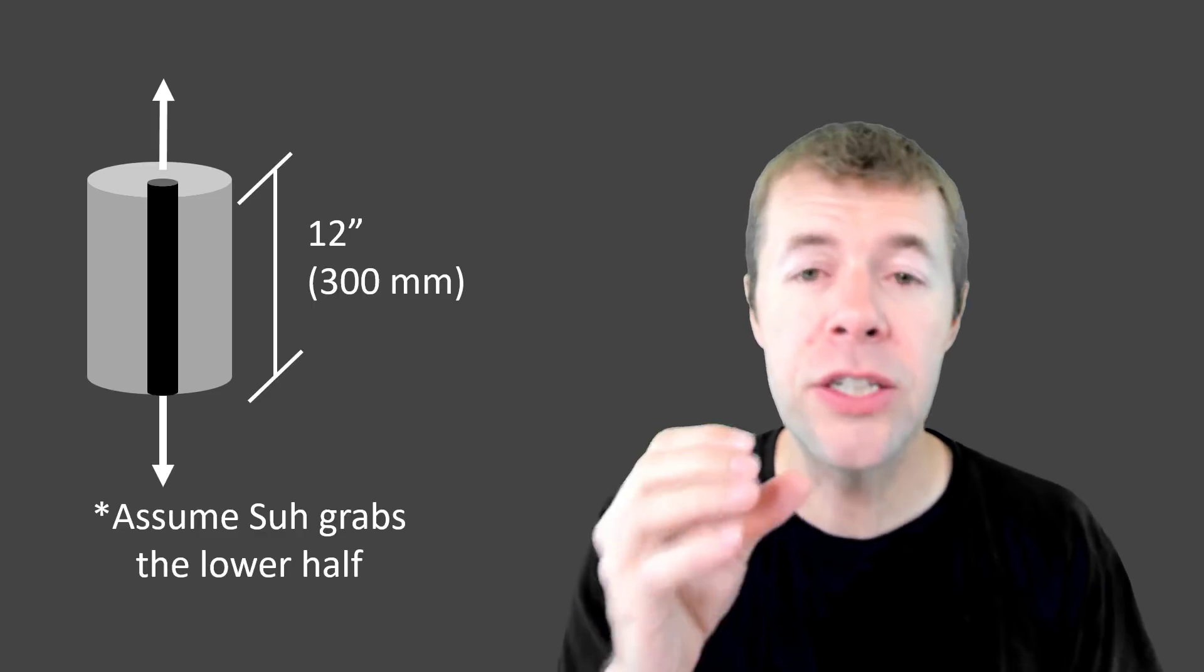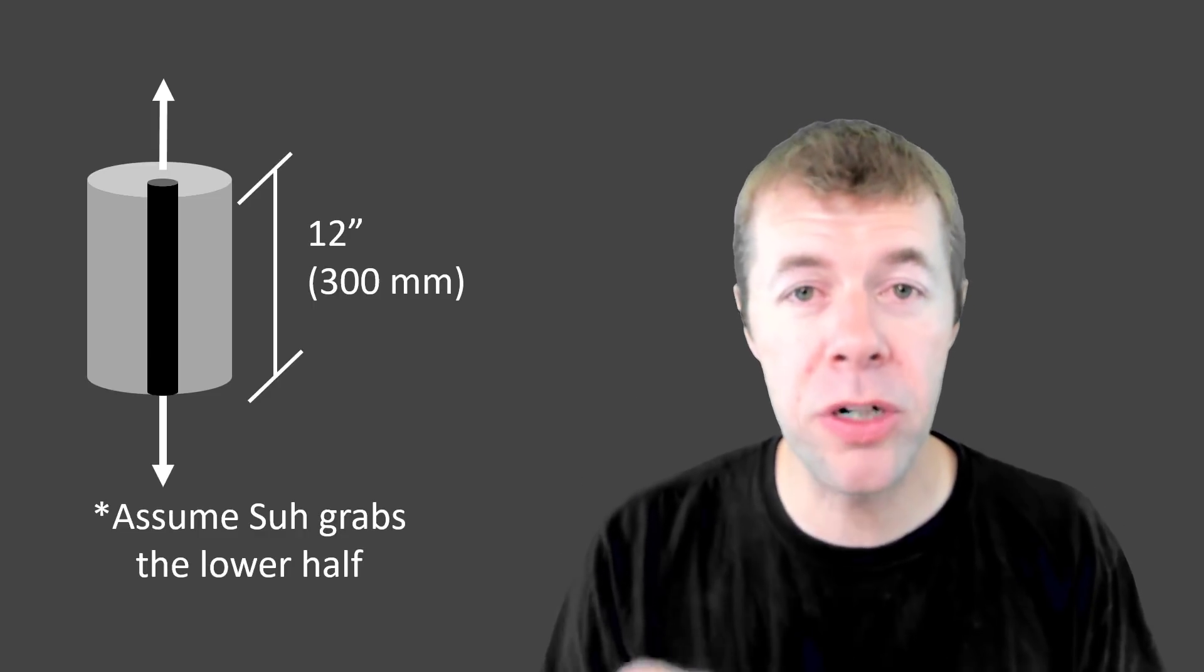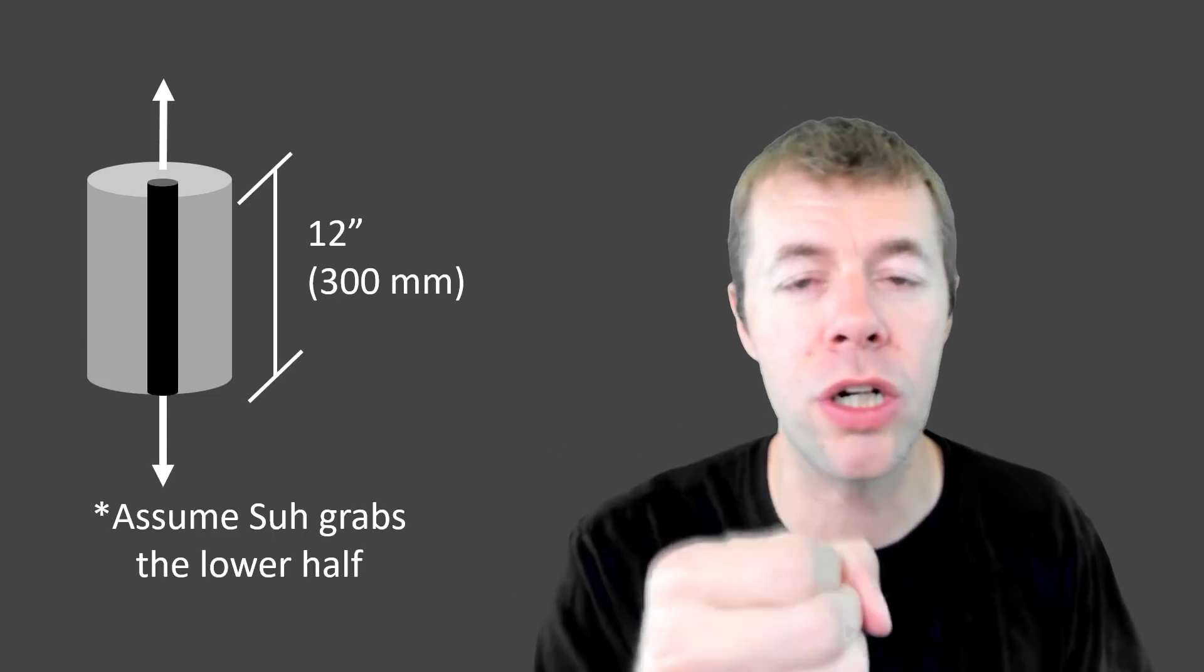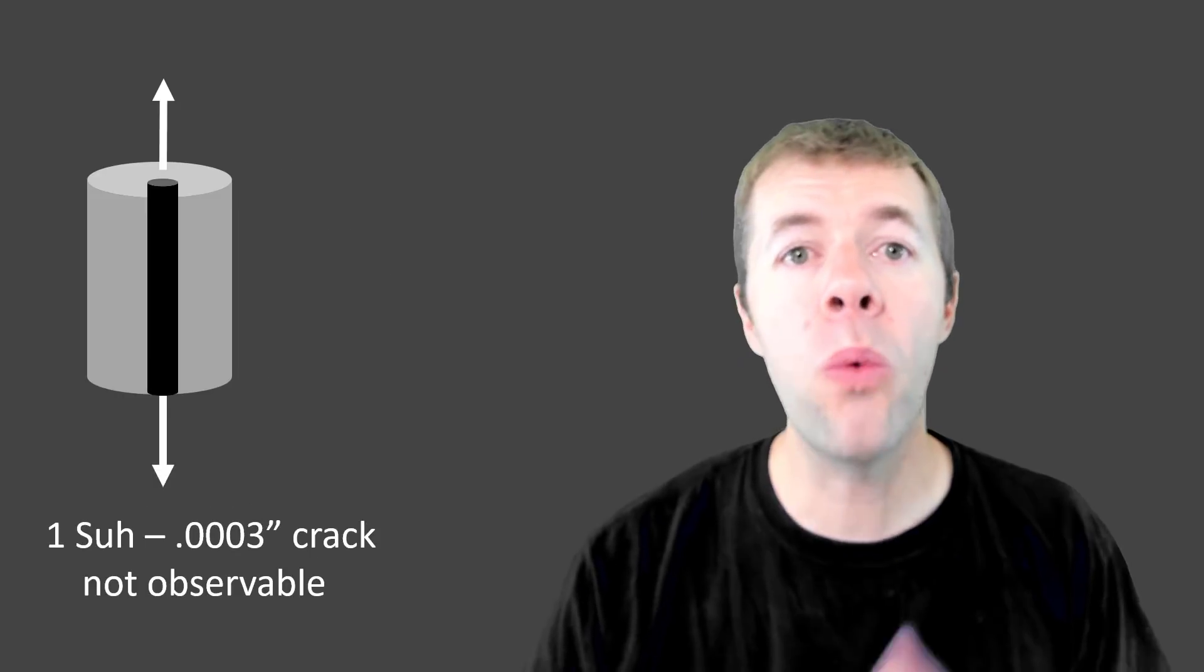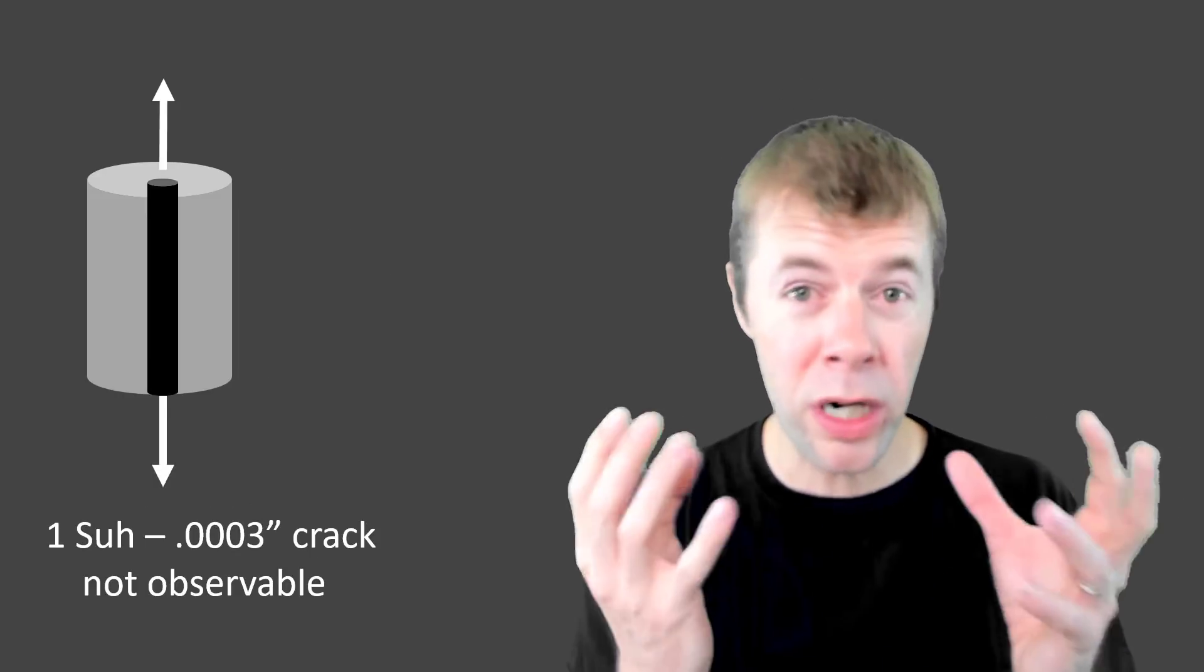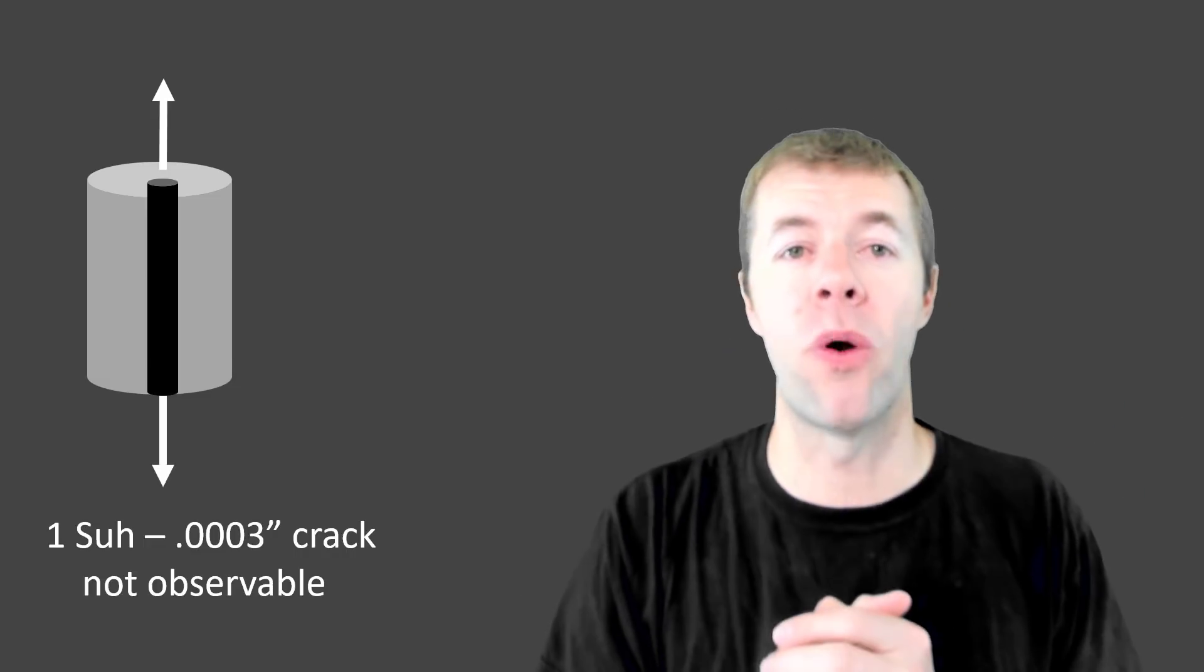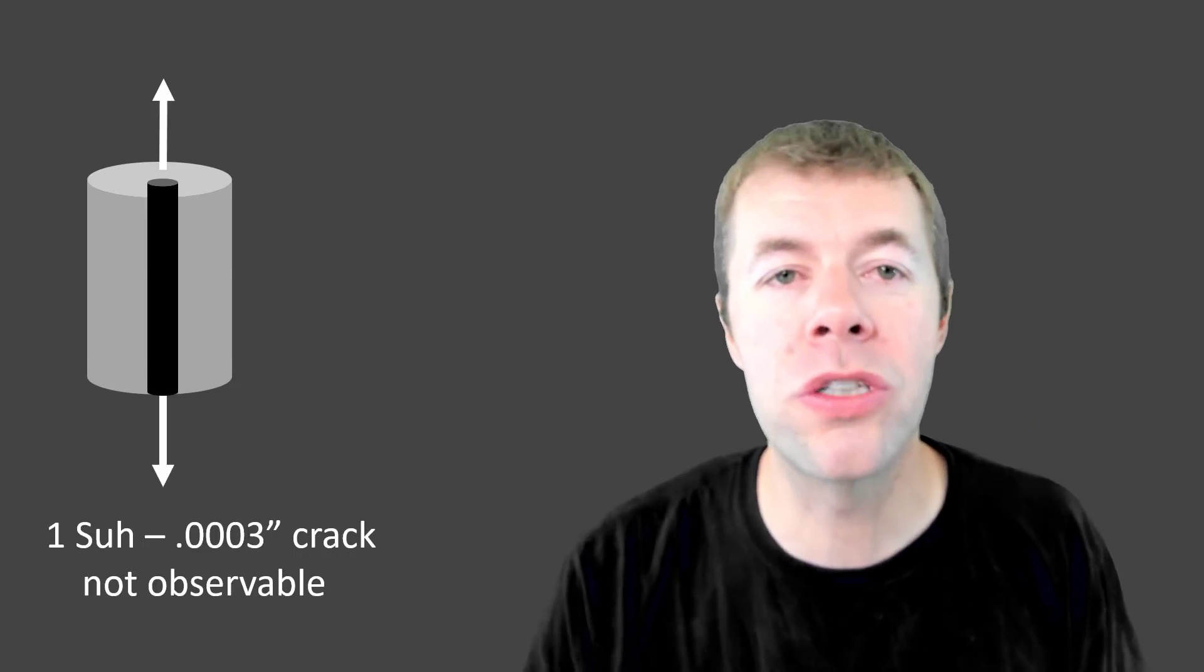We're going to assume it's a 12-inch long, one-inch diameter cylinder with a half-inch rebar in the middle. And we're going to assume Sioux's going to grab on to the lower half. So if you have one Sioux on there, what did happen before? It broke. You can't even see the crack that forms. It's not even noticeable.